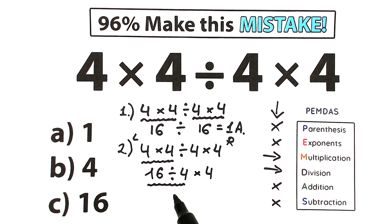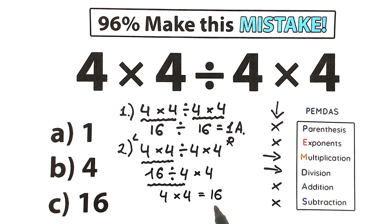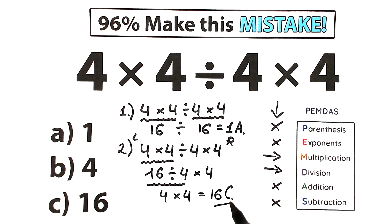So 16 divided by 4 gives us 4, and we still have this multiplication by 4, so 4 times 4 equals 16. This is option C. So right here option C gives 16, option A gives 1 — what is the correct answer, 16 or 1?